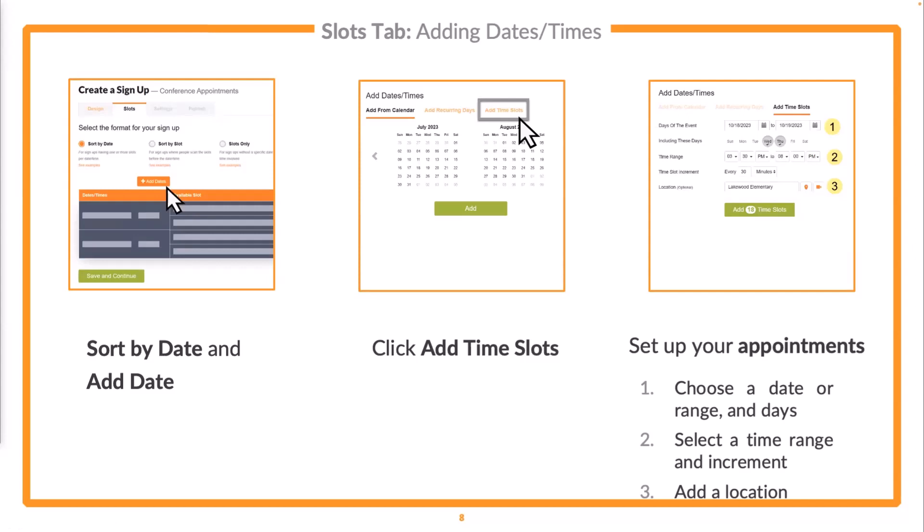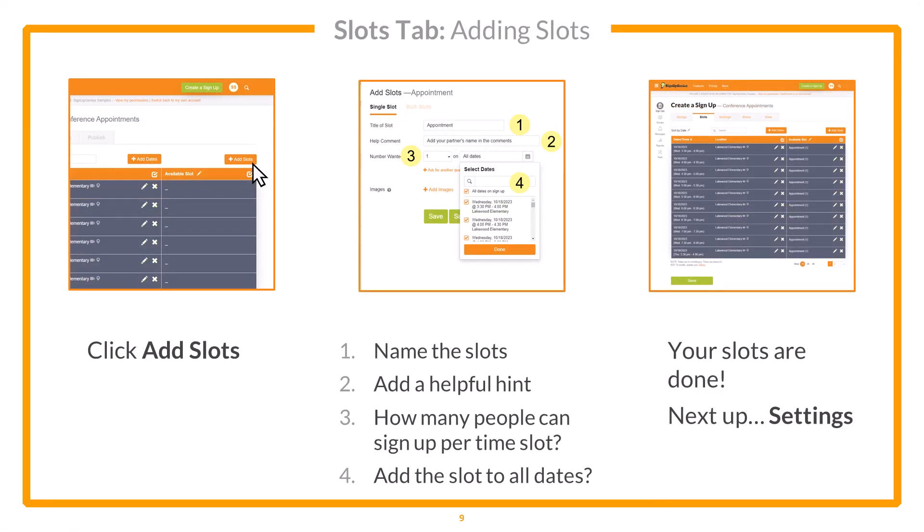If you want to add a physical location, you've got that option. We also have a Zoom integration if you want to add a meeting link for a virtual meeting. After you enter those parameters, it will populate all your dates and times, then you'll click add slots. Slots identifies what someone is signing up for. In this case, we'll keep the title simple — just appointment. You can add a help comment if you wish. Number wanted would be one, meaning for each time slot you want one person to sign up. Your preview shows those 30-minute time slots with an appointment allowing one person to sign up for each.